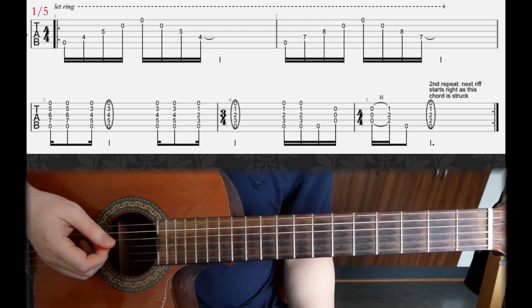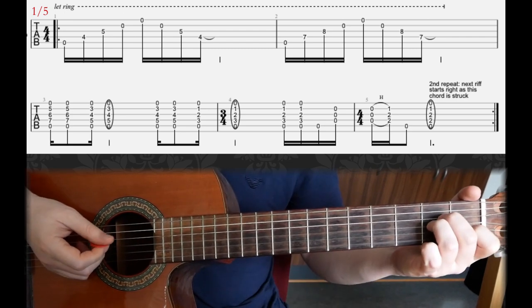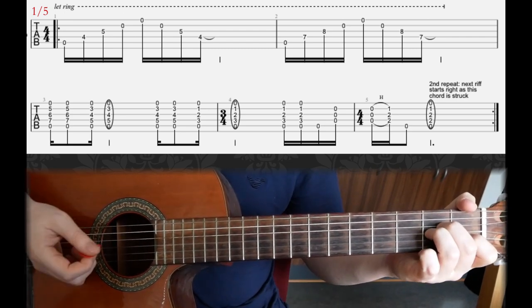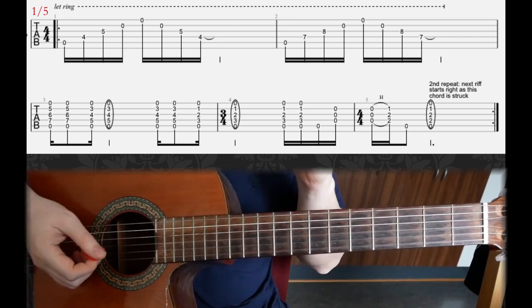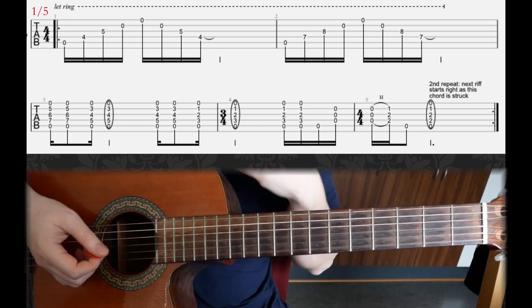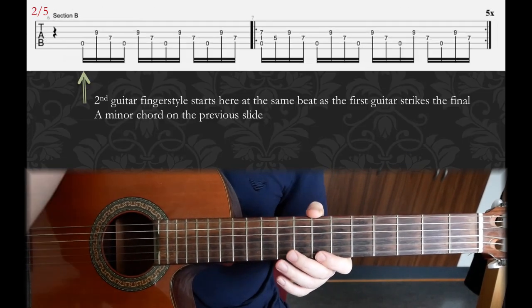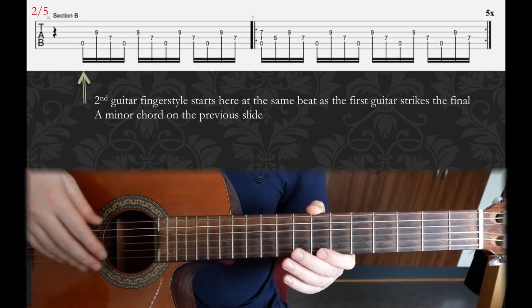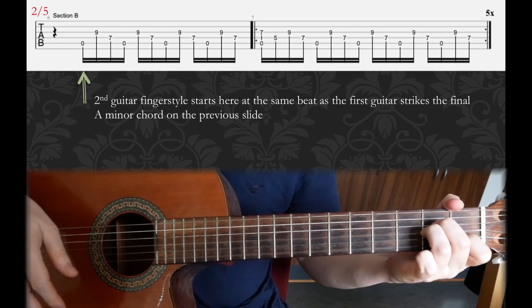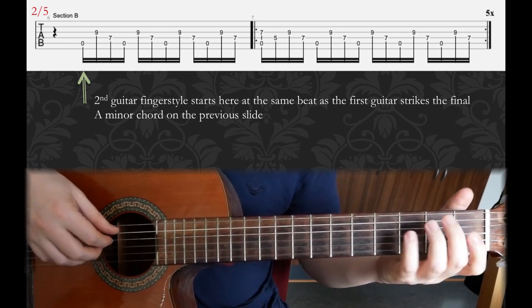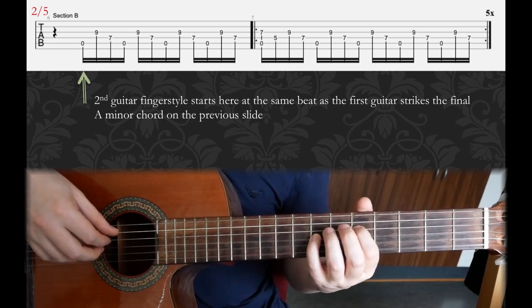Now, the second time you play it, when you strike the final A minor chord at the very end of the second line, right when he strikes that chord, the second guitar will commence and begin his riff. And we have it on the next slide, right here.